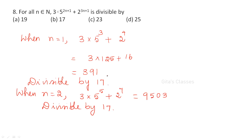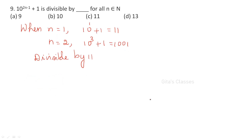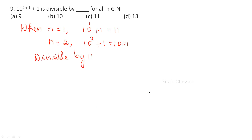Next is again a divisibility question. First substitute n = 1, n = 2, etc. If not possible, then go for S(k) and S(k+1). For this one, you can say it is divisible by 17 even for n = 2. You can use your calculator — since it is allowed in the exam — to divide and check whether the result is an integer or a decimal.